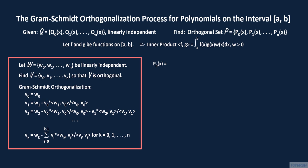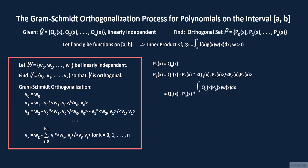The first polynomial element P sub 0 of x of the orthogonal set P is the first element of Q, so P sub 0 of x equals Q sub 0 of x. The second element P sub 1 of x equals Q sub 1 of x minus P sub 0 of x times the inner product of Q sub 1 and P sub 0 divided by the inner product of P sub 0 with itself. This equals Q sub 1 of x minus P sub 0 of x times the fraction whose numerator is the integral from a to b of the product of Q sub 1 of x, P sub 0 of x, and w of x, and whose denominator is the integral from a to b of the square of P sub 0 of x times w of x.